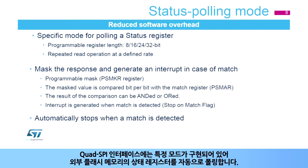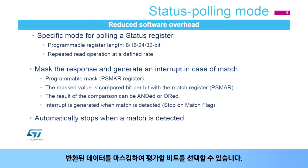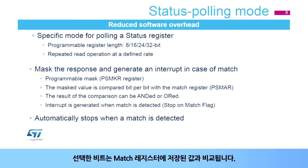A specific mode has been implemented in the Quad SPI interface to autonomously poll the status registers in the external flash memory. The Quad SPI interface can be configured to periodically read a register in the external flash memory. The returned data can be masked to select the bits to be evaluated, and the selected bits are compared with their required values stored in the match register.